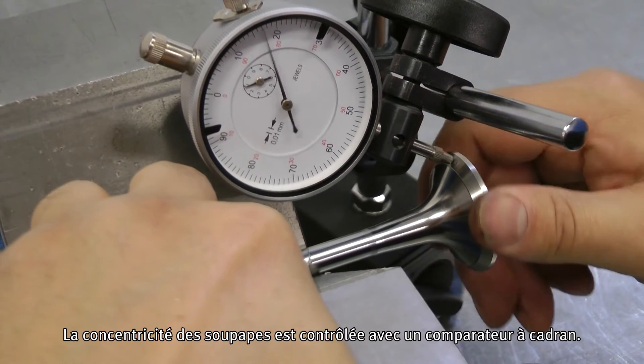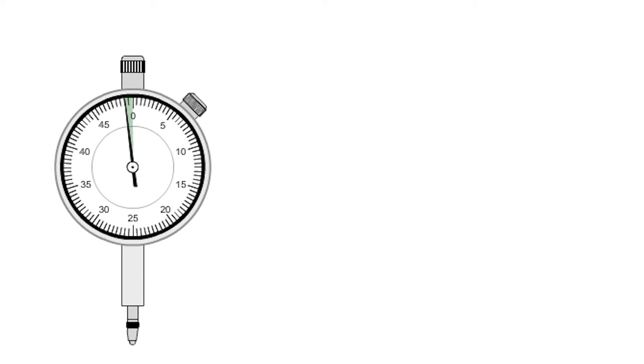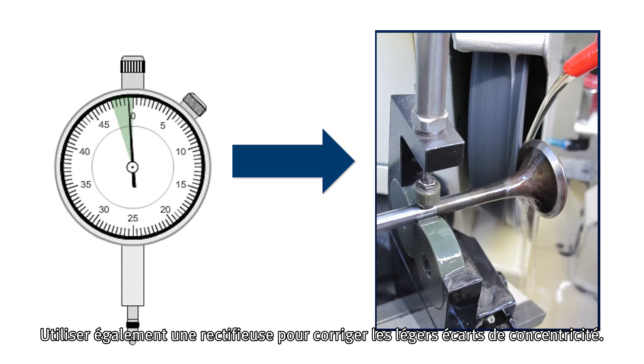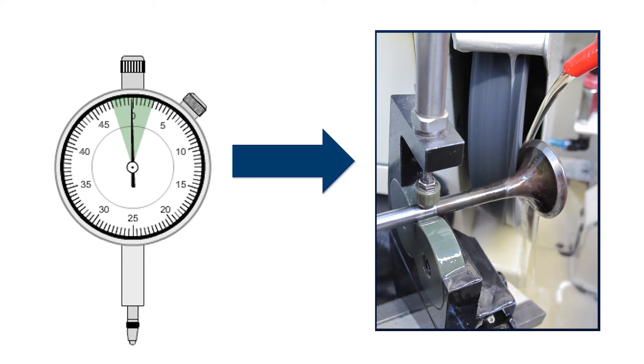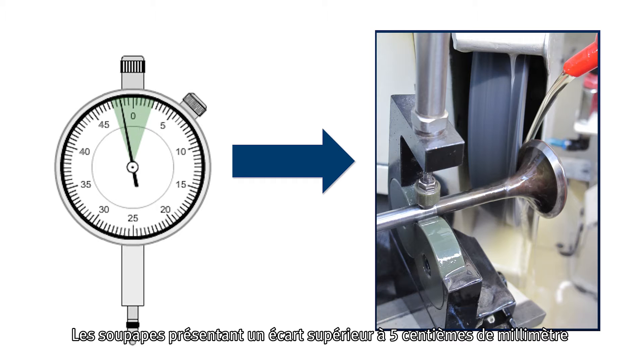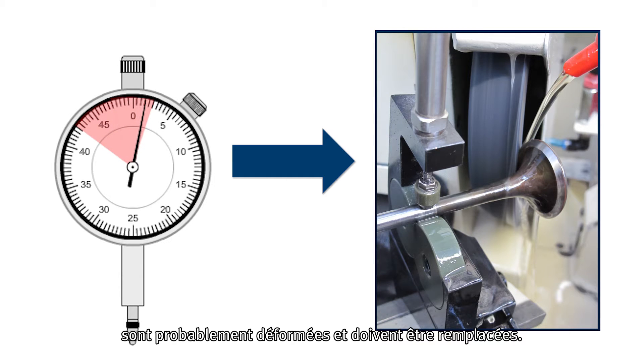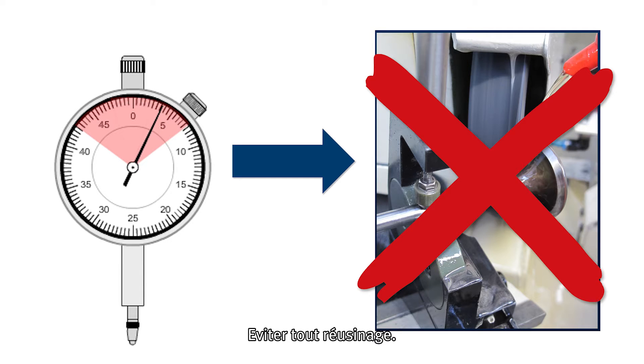Concentricity of the valves is checked with a dial gauge. Slight radial eccentricities can also be corrected with a valve grinding machine. Valves with a radial eccentricity of more than 500 mm might be bent and must be replaced. Rework should be avoided.